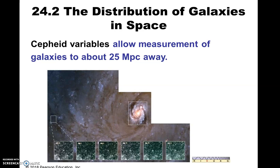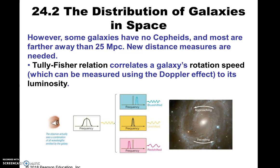There were these two folks, Tully and Fisher, who — I think this was discovered in the 1970s — came up with the Tully-Fisher relationship. The important thing about the Tully-Fisher relationship is that it only works for spiral galaxies. You have to have a spiral galaxy for this to work. When you look at a spiral galaxy, look at this picture — it shows it very well.